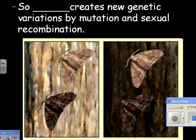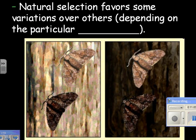This is the famous peppered moth — a natural experiment with the industrial revolution. Chance creates new genetic variations by mutation and sexual recombination. Before the industrial revolution, the trees were all nice and clean, and the light-colored moth survived better because it looked like the tree — the dark ones got picked off and eaten. Then after the industrial revolution, the trees were covered with soot and looked dark. Now the dark moth survived and the light one got eaten — it didn't have the camouflage. So this was a bad variation for that environment.